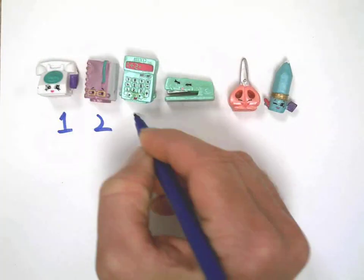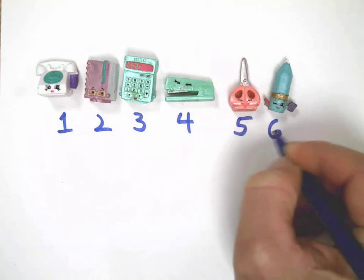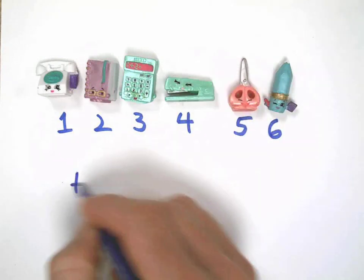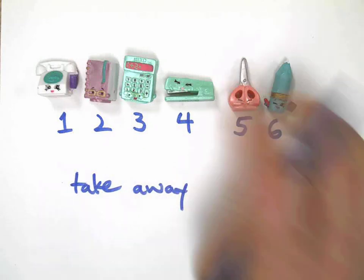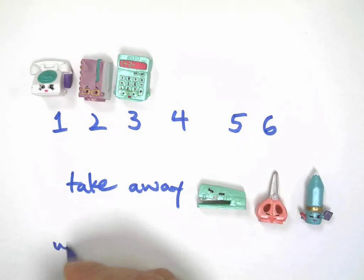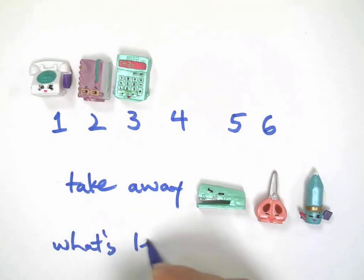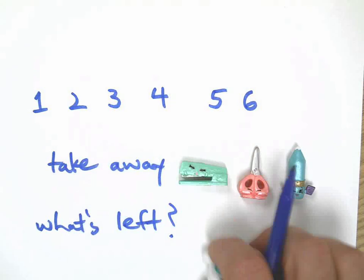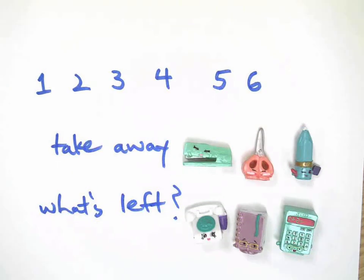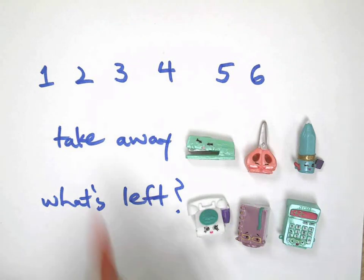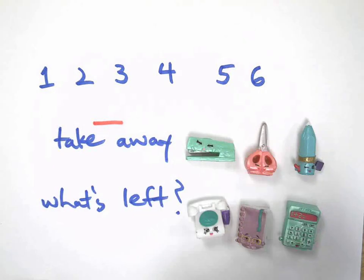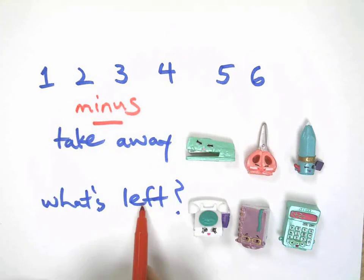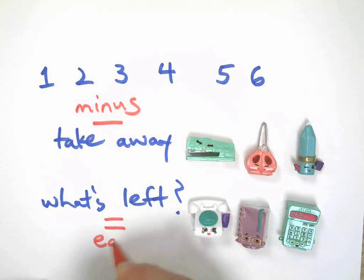You did remember! We have one, two, three, four, five, six — we have six Shopkins. Now, what happens if I take away three of them? What's left? There's still three left, right? Okay, so we get to learn one new thing here: when I say 'take away,' I use this little line here, and you might call that a minus sign.